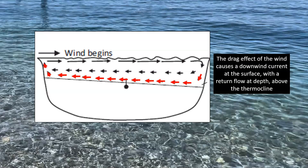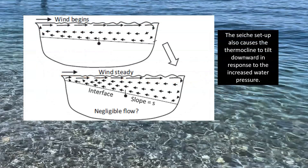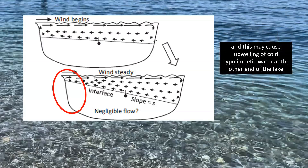The drag effect of the wind causes a downwind current at the surface with a return flow at depth above the thermocline. The seiche setup also causes the thermocline to tilt downward in response to the increased water pressure. This may cause upwelling of cold, hypolimnetic water at the other end of the lake.